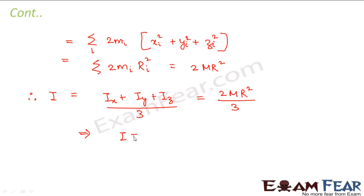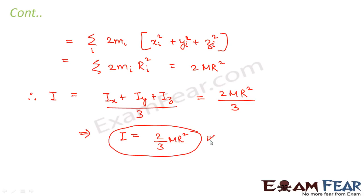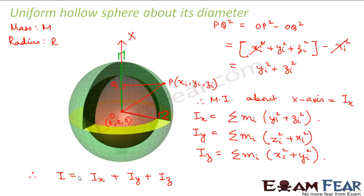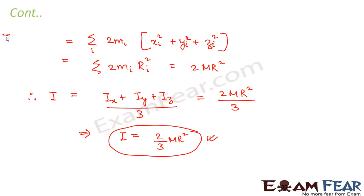So the moment of inertia of a hollow sphere is given by 2/3 MR². Here, I equals the total divided by 3 because Ix is the moment of inertia about the x-axis, Iy about the y-axis, and Iz about the z-axis. The mean of the moment of inertia about all three axes gives the net moment of inertia. So I = 2/3 MR².